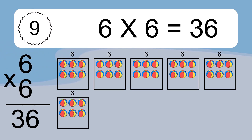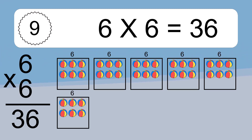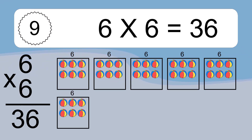We have 6 boxes, and each box has 6 colorful balls inside. If you count all the balls in all the boxes together, you will have 6 times 6 balls. This equals 36 balls.